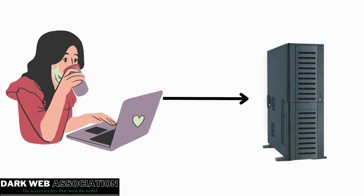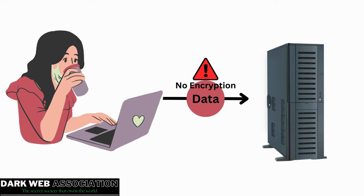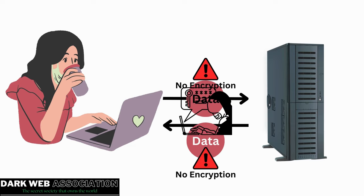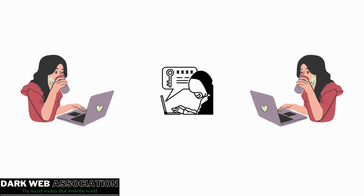For example, I am a client communicating with a server — I have a request being sent to the server. During that time, if my data transfer is not encrypted, it means my data is being transferred in plain text. A third person intercepts the request, accesses it, modifies it, and the response you get will be different — they get what they want.